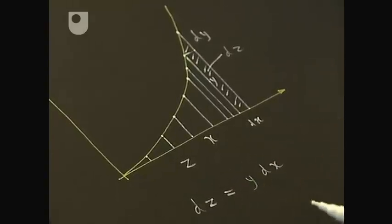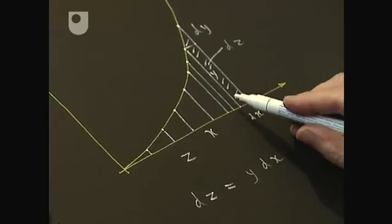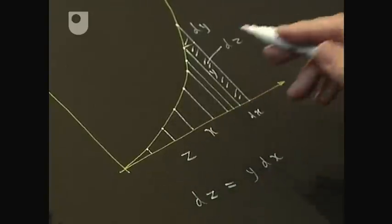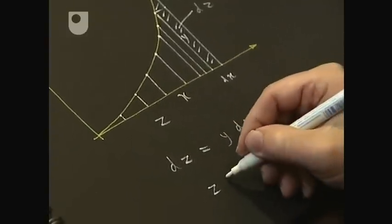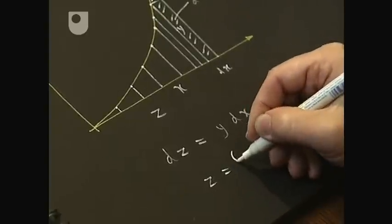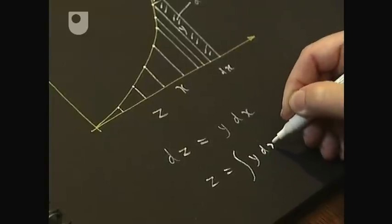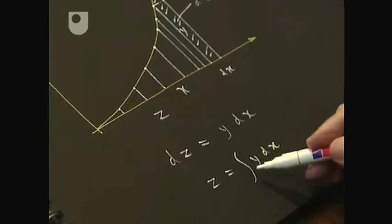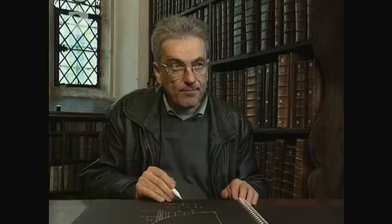So this is correct within this calculus. And now we take the sum over all this dz, and this gives the area. So the sum is equal to the sum over all y times dx. And this integral sign here, as we are used to, is derived from the normal s. And so we have derived the fundamental theorem.